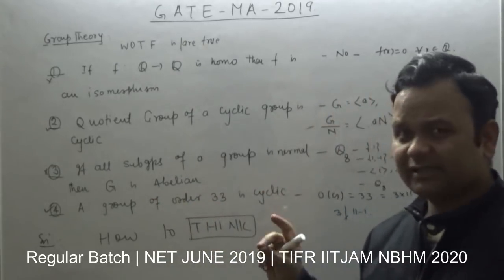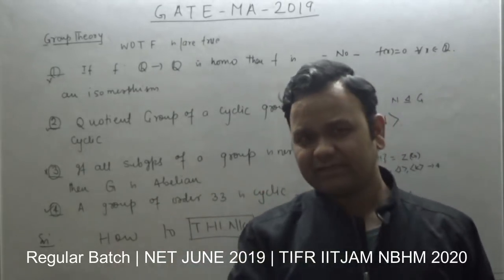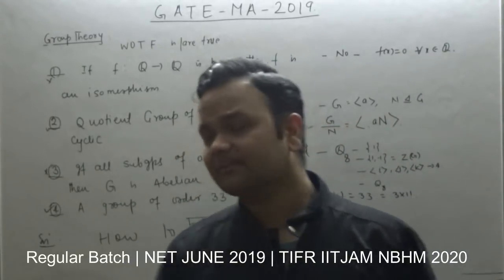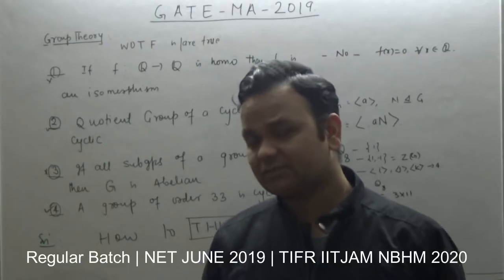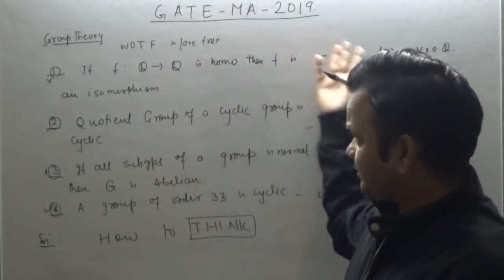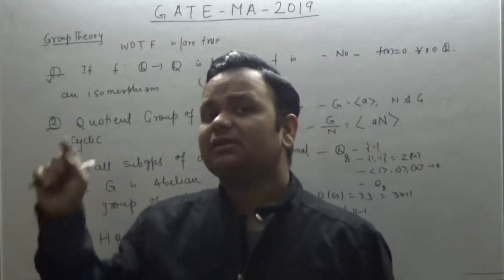Group of order 33 is cyclic. A general p times q result: if p is less than q and p does not divide q minus 1, then that group is cyclic. And if p divides q minus 1, then it fails; there are counterexamples.